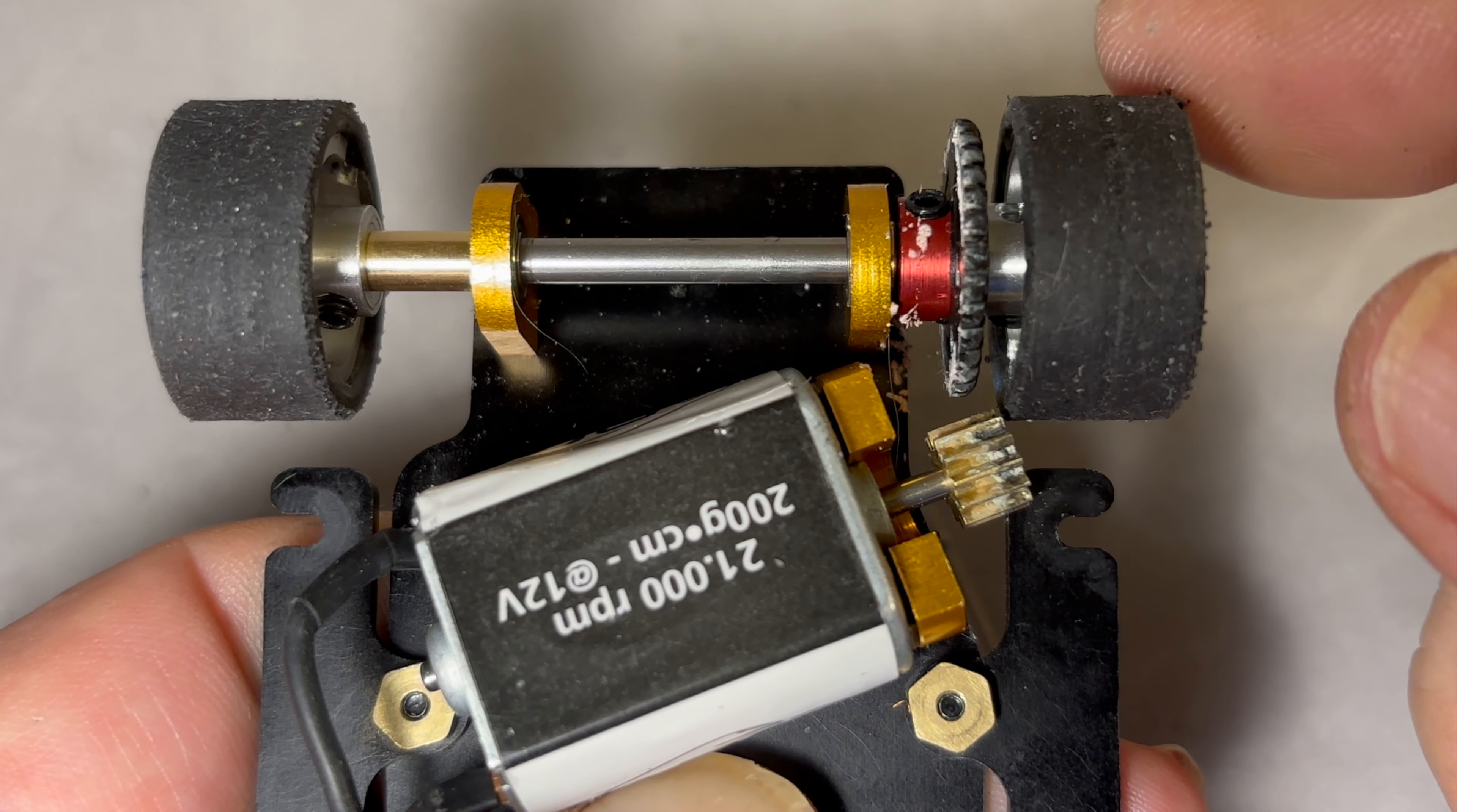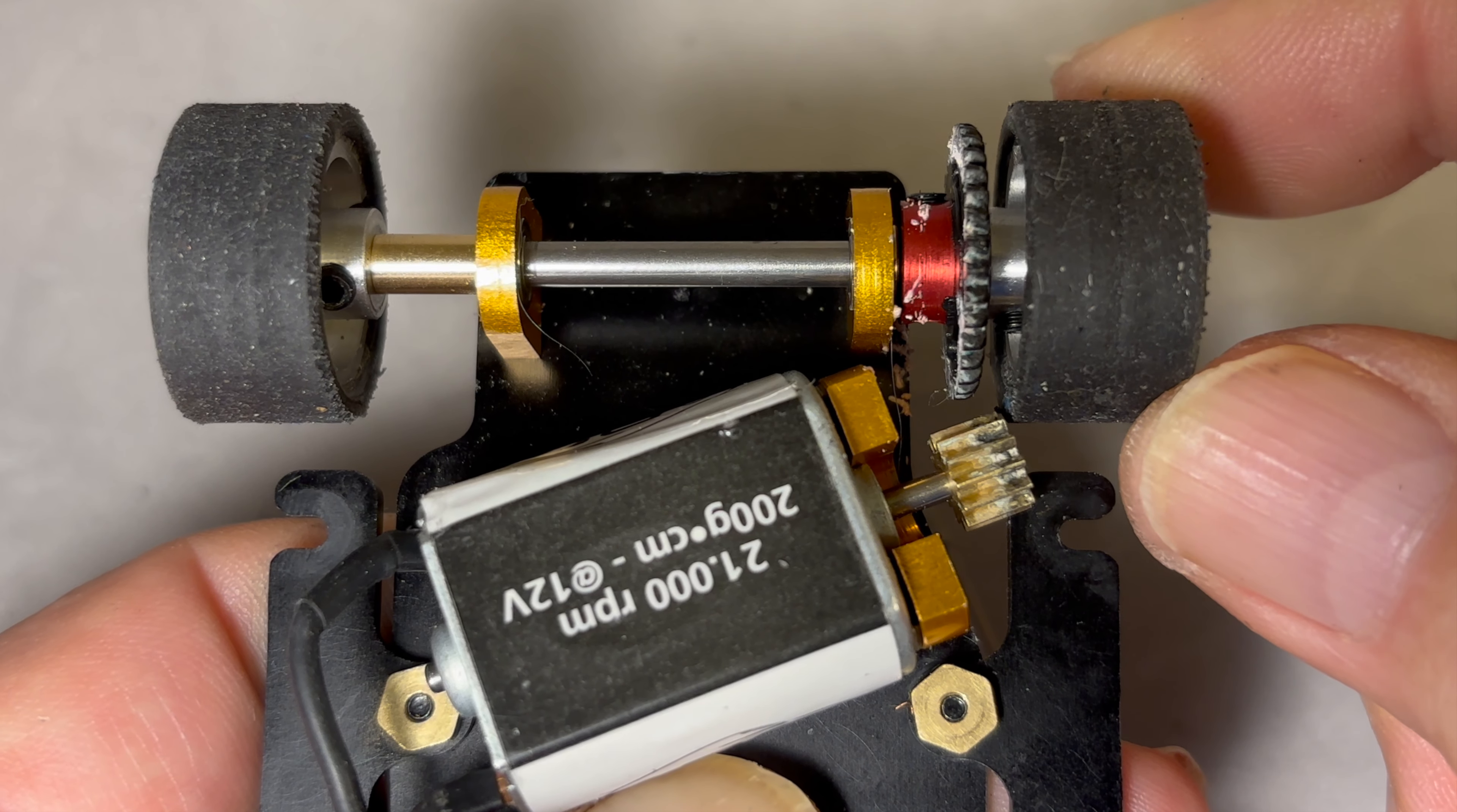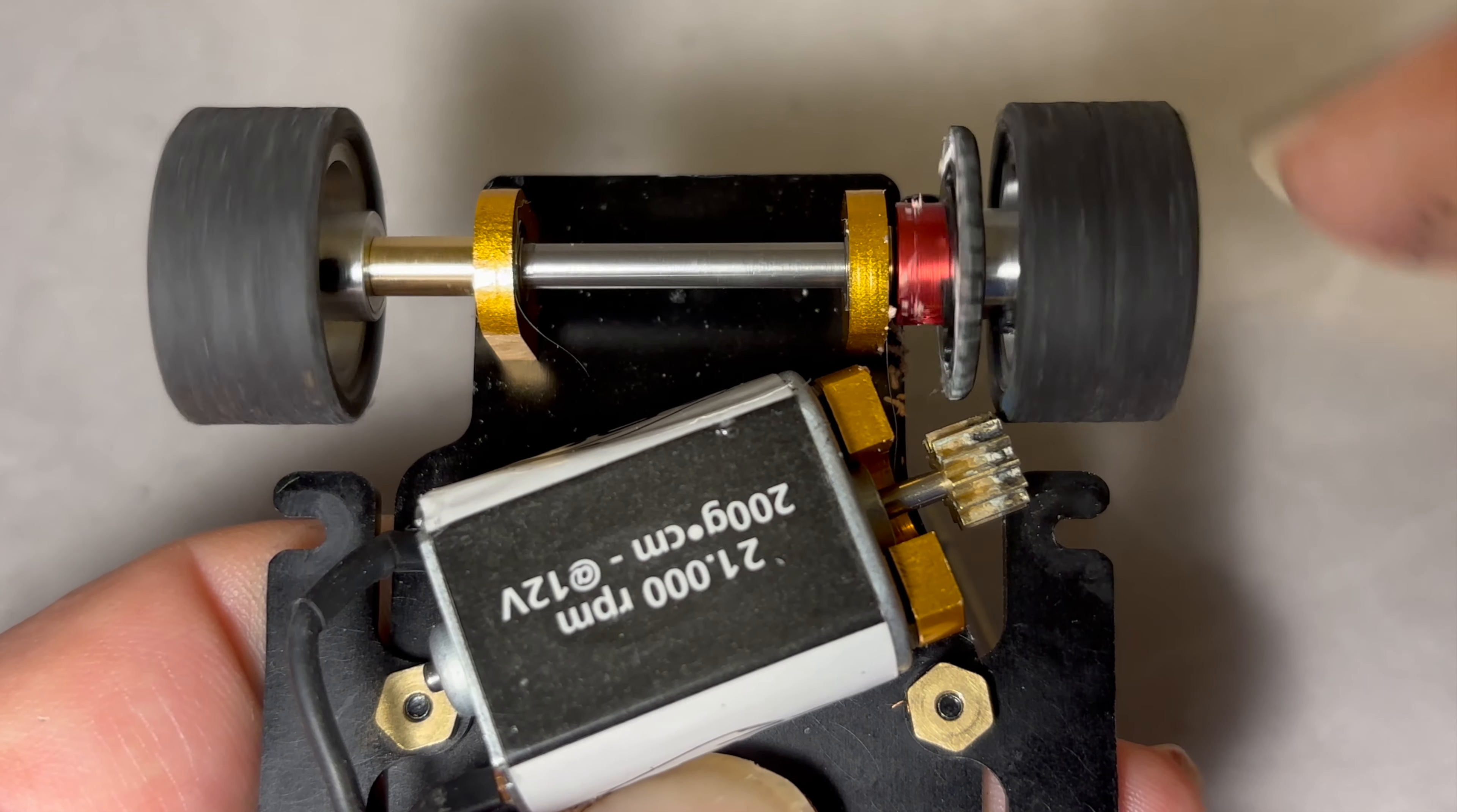Loosen the motor and move it away from the gears to make sure that the axle is aligned properly and the bearings are spinning freely.